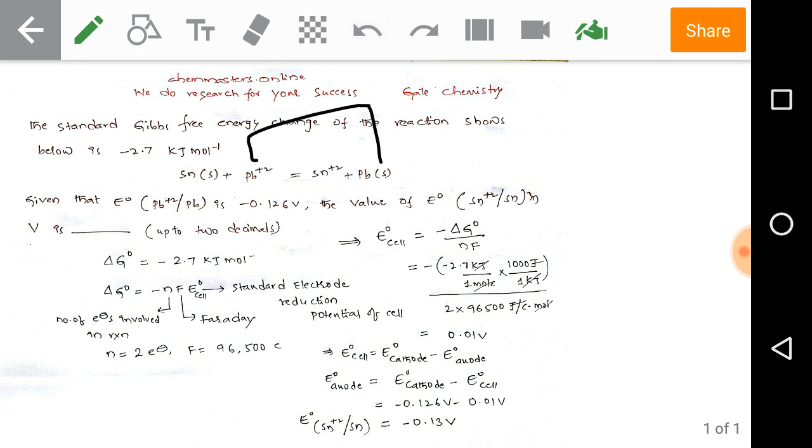We need to find Sn to Sn²⁺ half cell, the anode half cell reduction potential. That is the standard anode half cell reduction potential for Sn²⁺ to Sn.